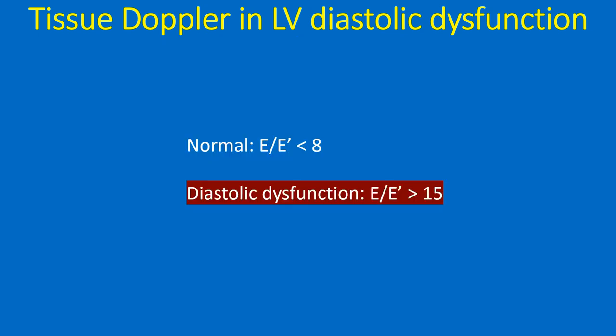E-by-E prime below 8 is considered normal, while a ratio above 15 is considered a feature of left ventricular diastolic dysfunction. E-by-E prime has also been correlated with left atrial pressure, which is in fact the left ventricular filling pressure that increases in left ventricular diastolic dysfunction. Estimation of pulmonary capillary wedge pressure from E-by-E prime on tissue Doppler was covered in another video on this channel.